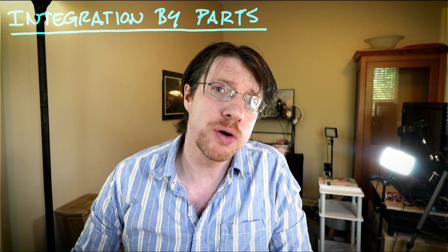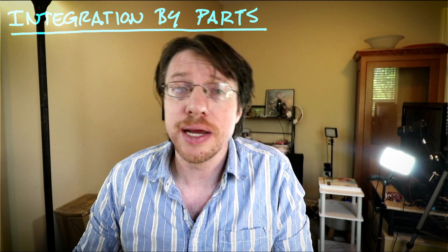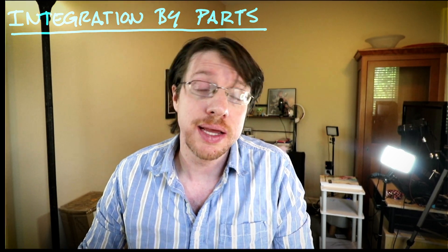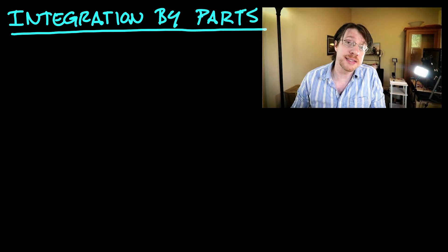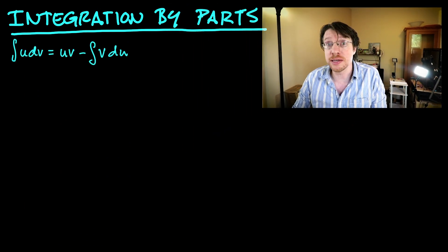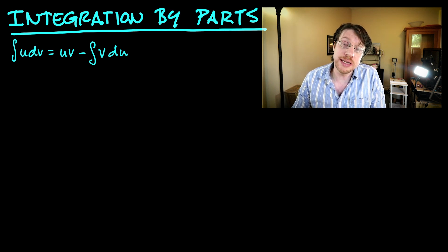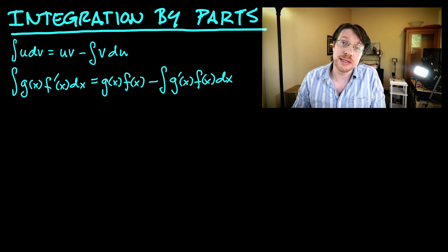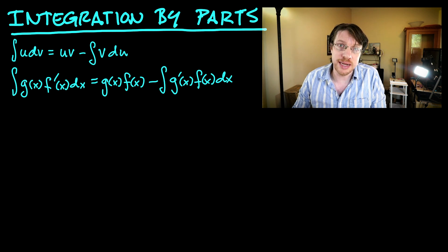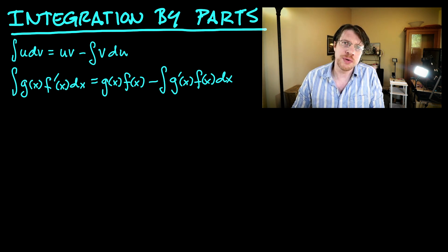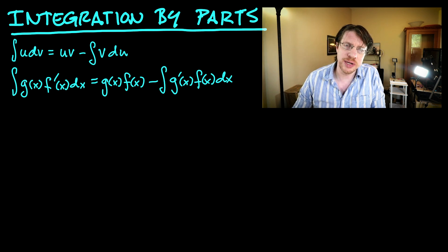Now we're onto integration by parts — probably the most important integration technique from calculus 2, and we'll use it all the time in differential equations. In its simplest form: the integral of u dv equals uv minus the integral of v du. Equivalently, the integral of g times f-prime dx equals g times f minus the integral of g-prime times f dx. In other words, we're moving the derivative off of one function onto another, at the cost of a minus sign and an extra term.